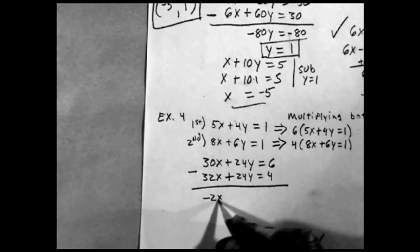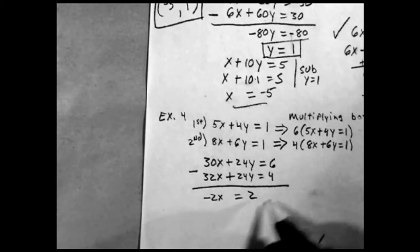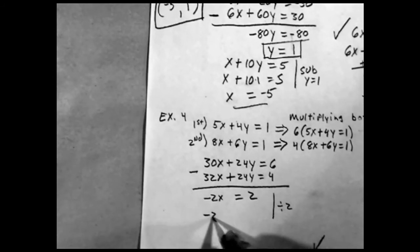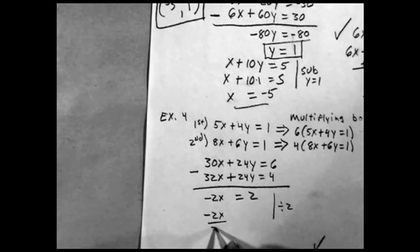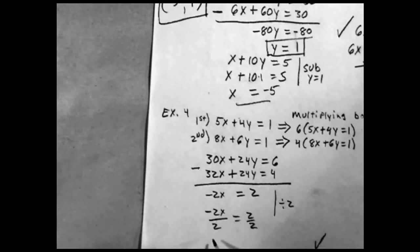These two we're going to subtract, and I get negative 2x equals 2. Divide by 2.